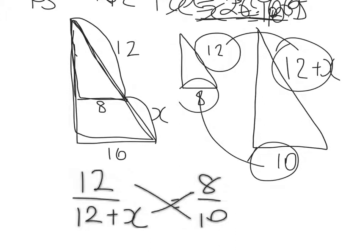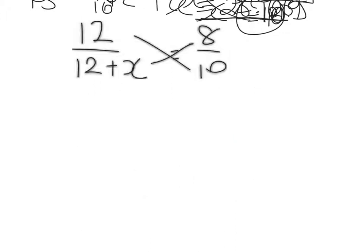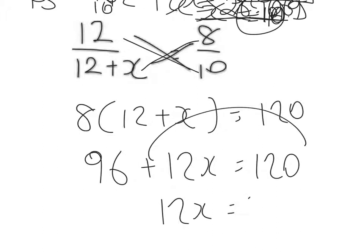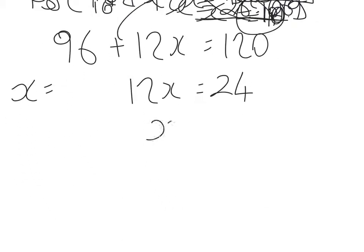So this time we've got the fact that 12 to 12 plus x will be equal to 8 to 10, and we can cross multiply. So 8 lots of 12 plus x will be equal to 12 lots of 10, which is 120. 8 lots of 12 is 96, so that's 96 plus 8x equals 120. That'll be 8x equals 120 take away 96, which is 24, and x will be equal to 24 divided by 8. x is equal to 2.